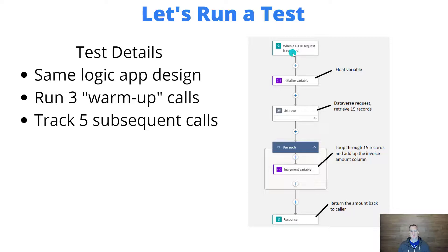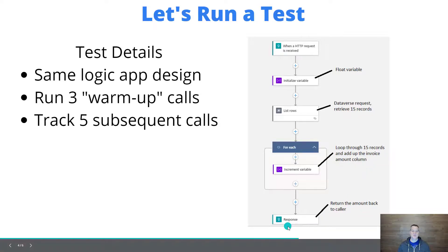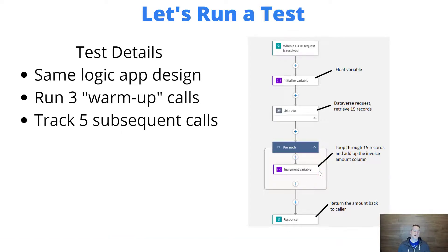The logic app will receive an HTTP request, initialize a float variable called 'total', list 15 invoices from Dataverse, calculate the total amount of all those records, loop through each of the 15 records in the result set, add up the amount, and return that total amount value back to the caller. We'll then be able to compare the two different execution times.